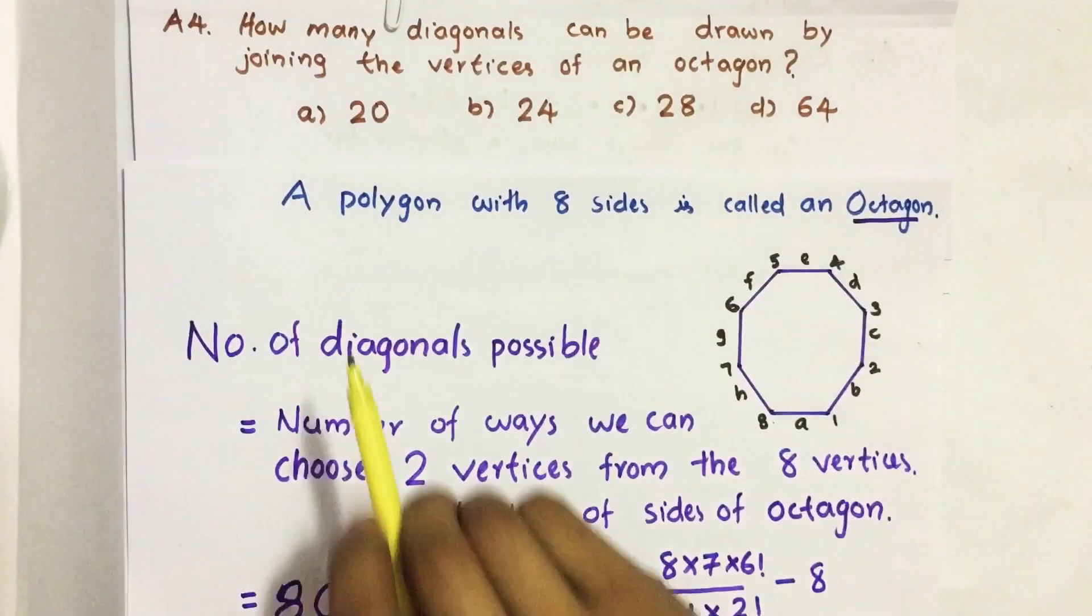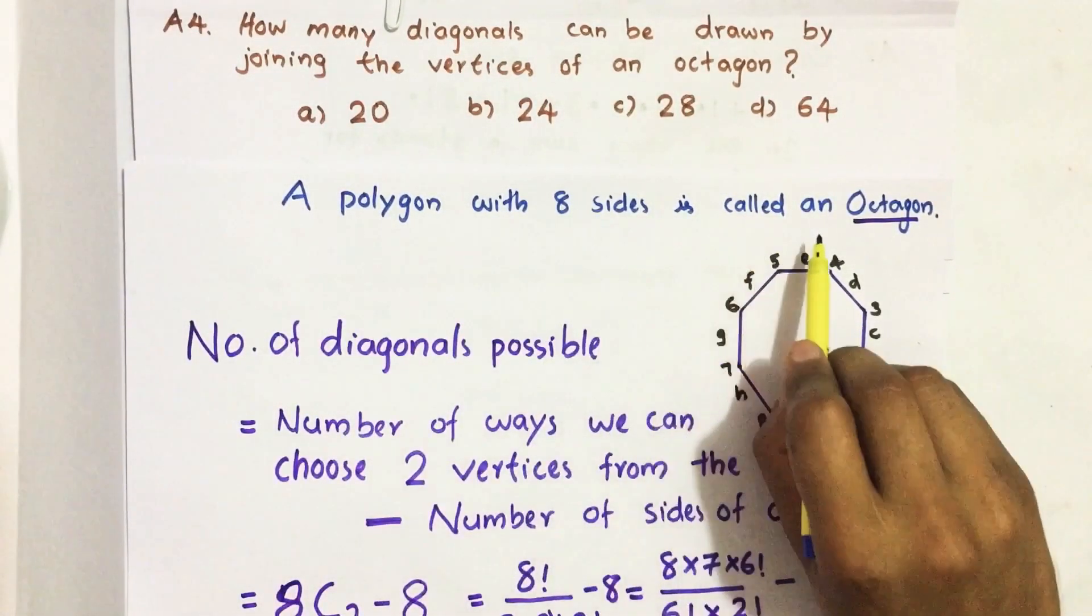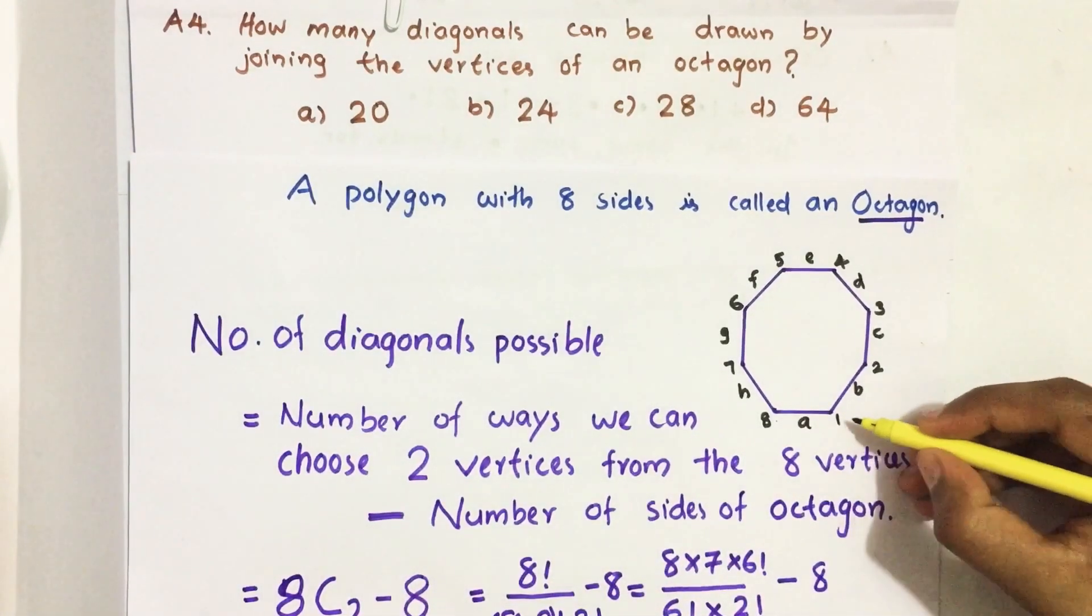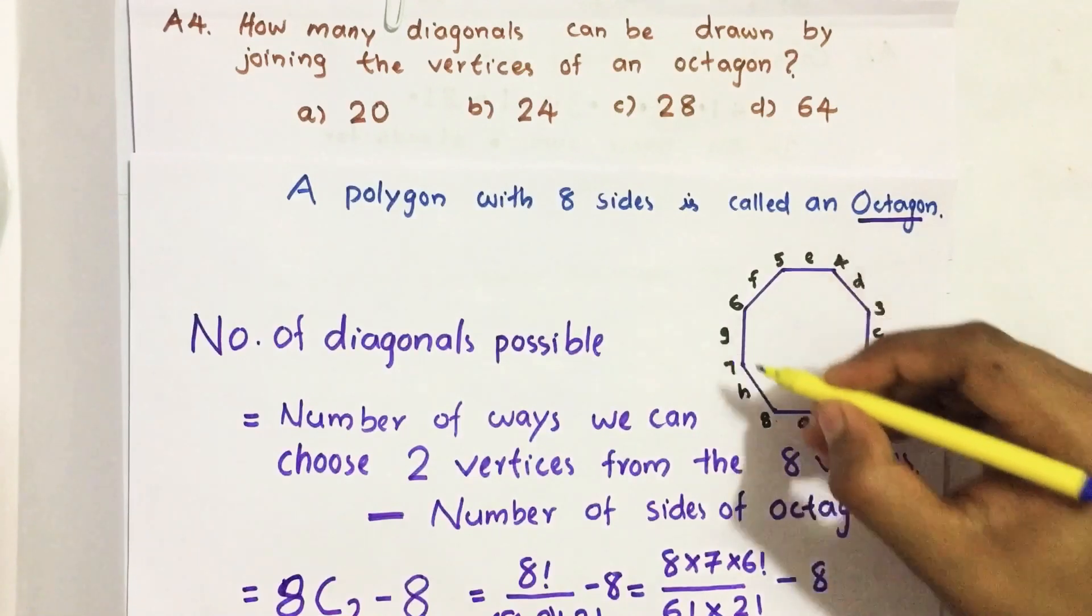What is an octagon? A polygon with 8 sides is called an octagon. Here I have drawn an octagon. It has 8 vertices too which are denoted here: 1, 2, 3, 4, 5, 6, 7, 8.